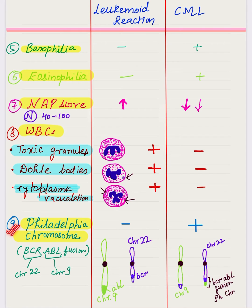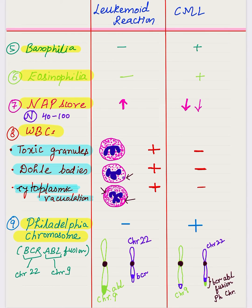A very important point is the presence of the Philadelphia chromosome, which is used for diagnosis when there is diagnostic dilemma between CML and leukemoid reaction. The Philadelphia chromosome is formed by reciprocal translocation between chromosome 9 and 22. The ABL gene is on chromosome 9 and BCR is on chromosome 22; reciprocal translocation results in a BCR-ABL fusion gene whose product is tyrosine kinase. Detected by molecular methods like FISH, the Philadelphia chromosome is the most important diagnostic test to differentiate these two conditions.